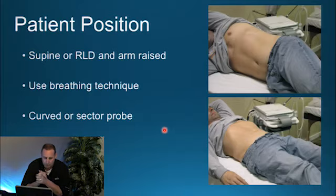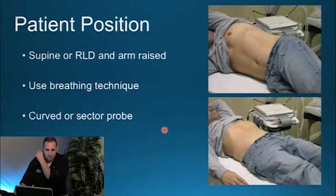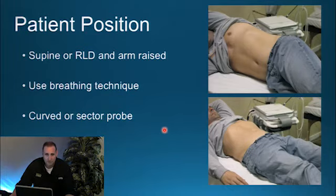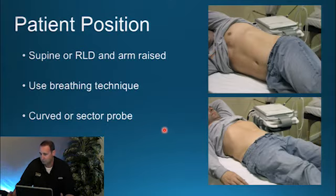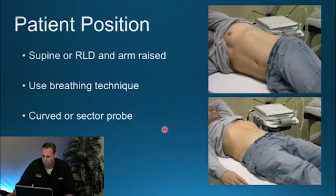For transducer selection, the curved or sector probe will work. The curved probe has better detail resolution but has a tougher time getting between the rib spaces. The sector probe has less detail resolution but can get between the rib spaces — though you lose more near field. You have to weigh the pros and cons when choosing your transducer.